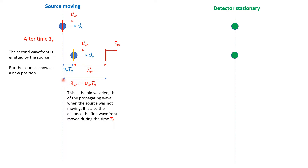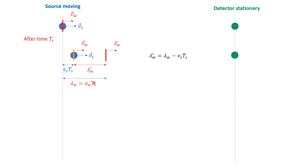If the source were stationary, it would have emitted the second wavefront at the original point, and that distance would have been the old wavelength. The old wavelength where the source was stationary is v_w · T_s. So the new wavelength is shorter, and the relationship is simply: λ' = λ − v_s · T_s.